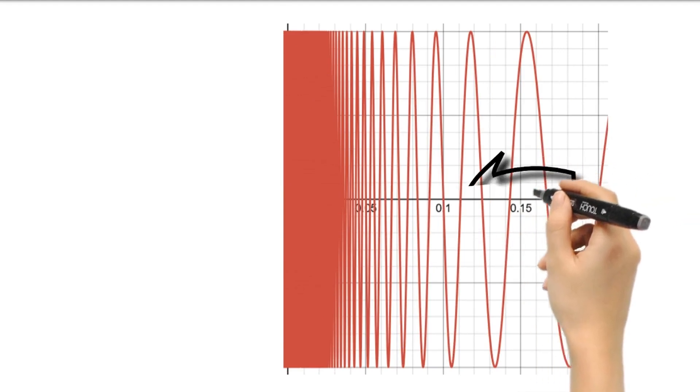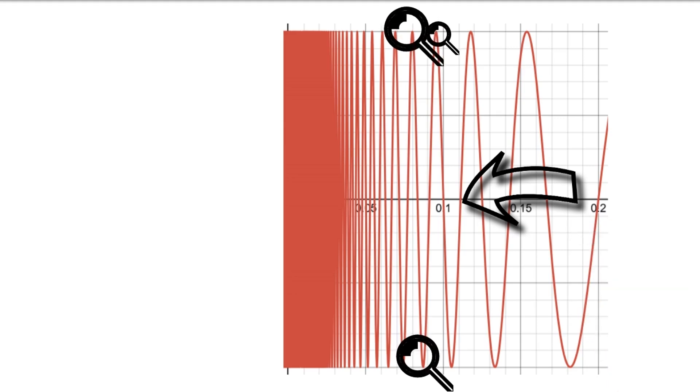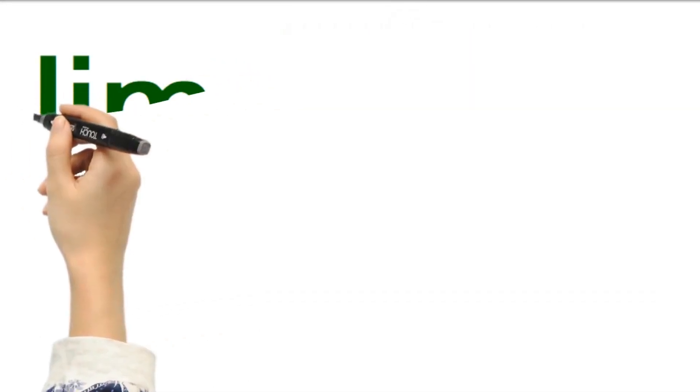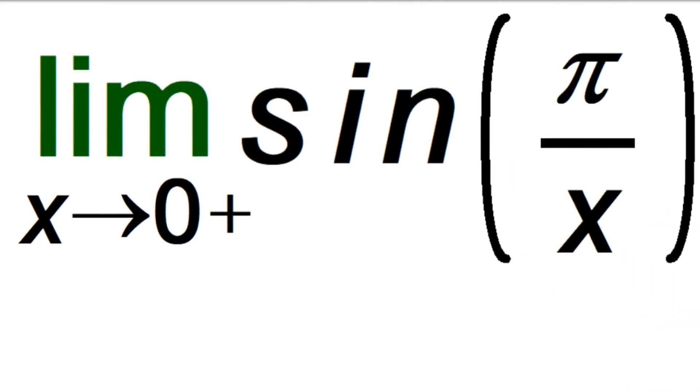Notice that as x goes to 0 from the right side, the y coordinates just bounce up and down and never settle down to a value. This tells us that as x goes to 0 from the right side, the limit of sine of pi over x does not exist.